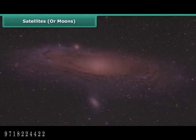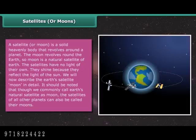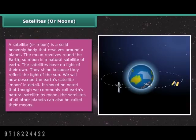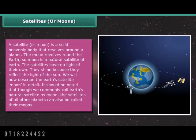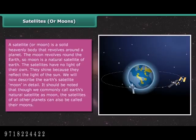A satellite or moon is a solid heavenly body that revolves around a planet. The Moon revolves around the Earth, so the Moon is a natural satellite of Earth. Satellites have no light of their own — they shine because they reflect the light of the Sun. Though we commonly call Earth's natural satellite the Moon, the satellites of all other planets can also be called their moons.